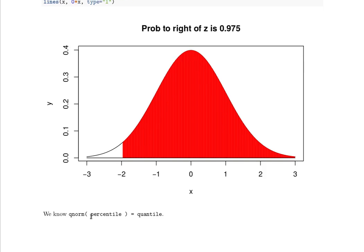We know that the Q norm of a percentile is the quantile, or that the Q norm of the probability to the left will tell us that Z value that we're looking for.